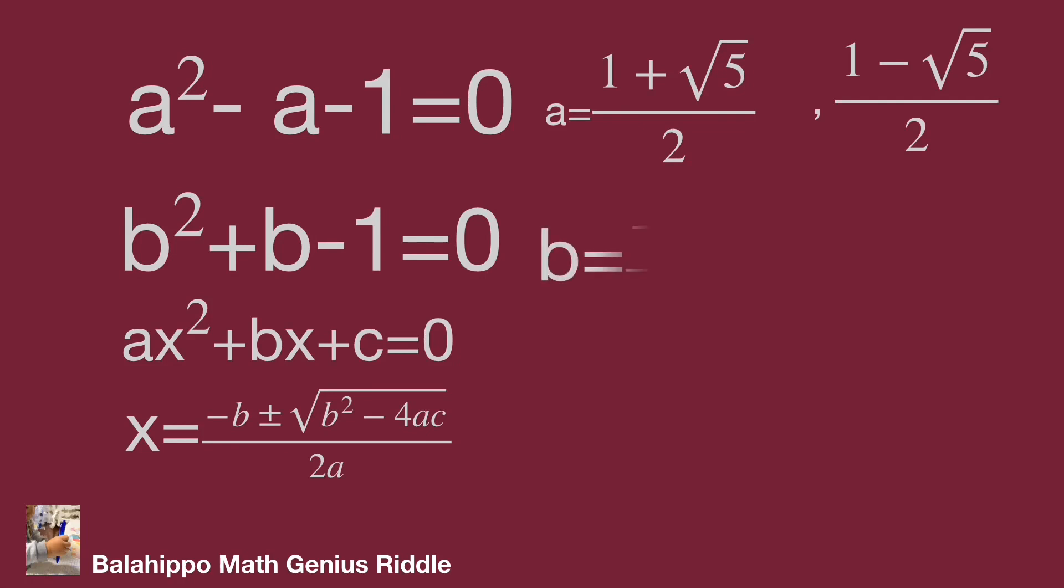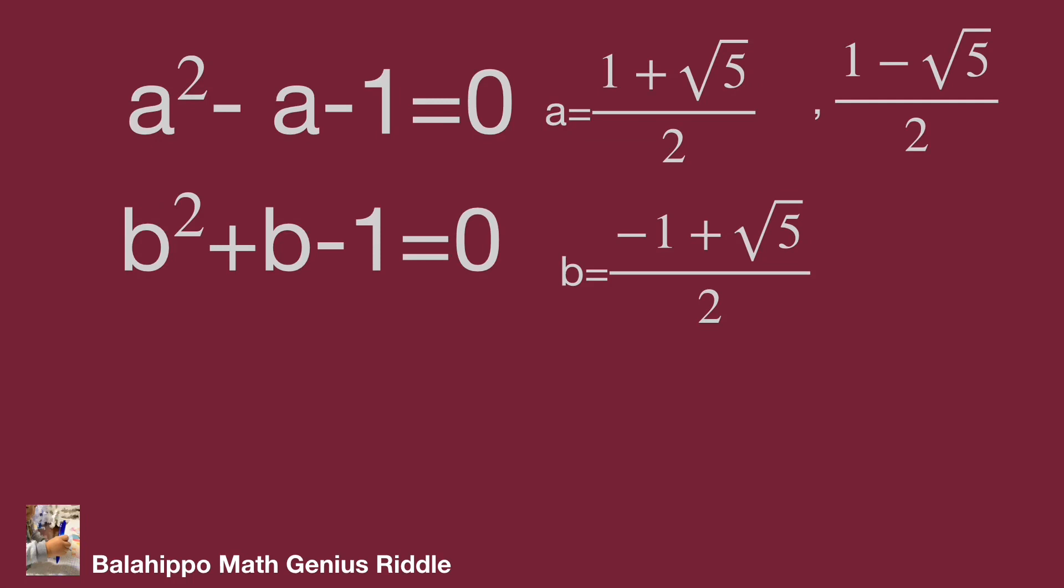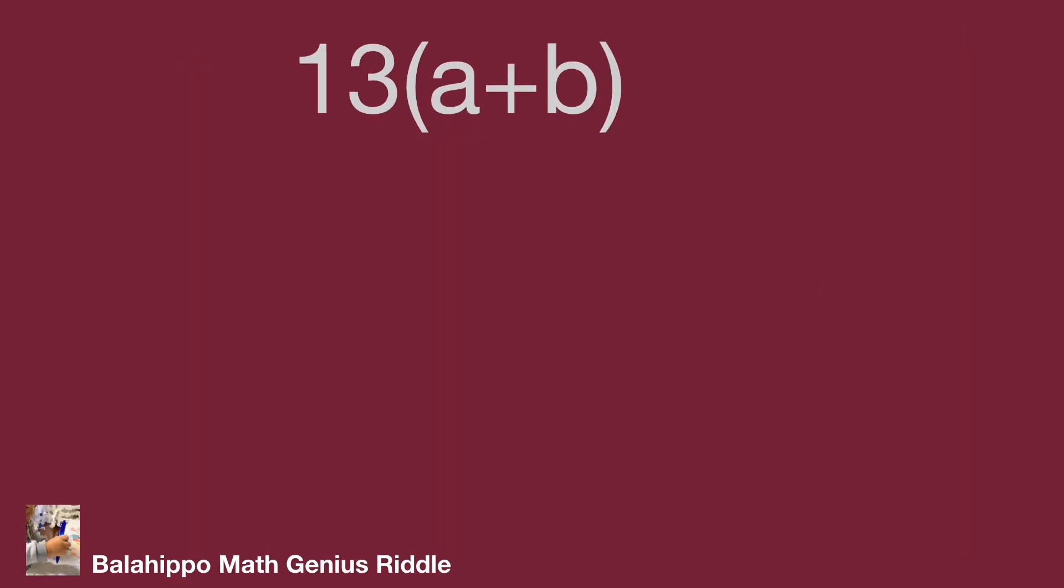Then to get b, b equal to minus one plus square root five over two and minus one minus square root five over two.